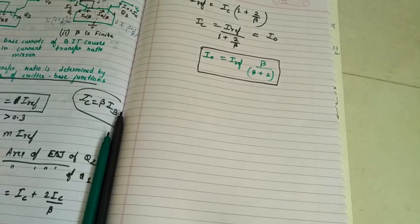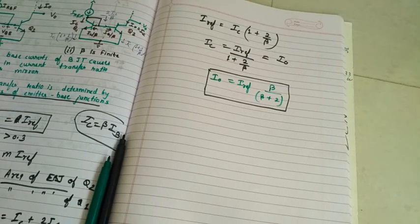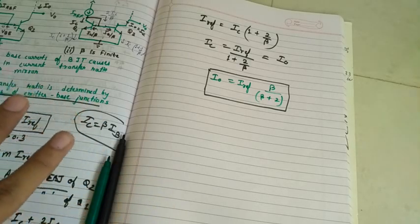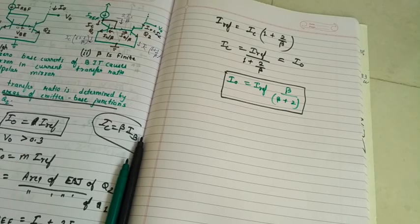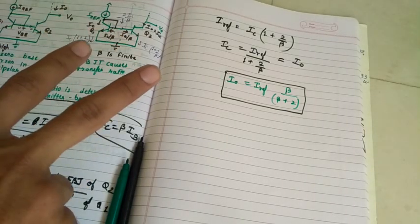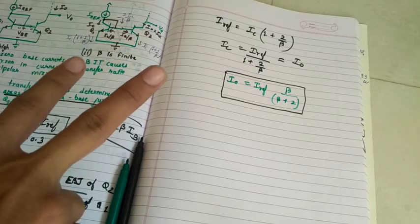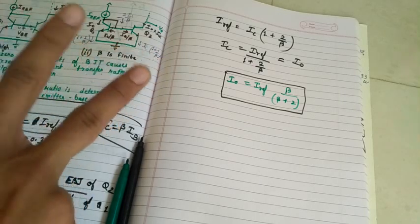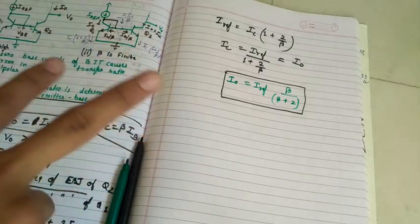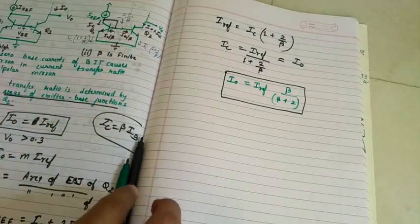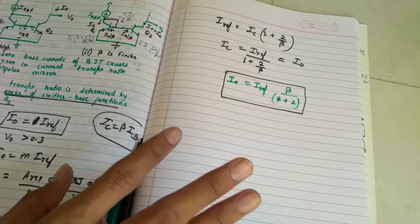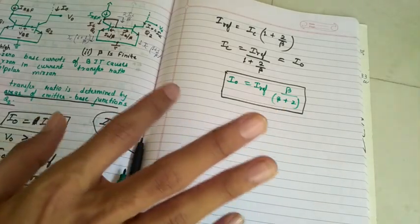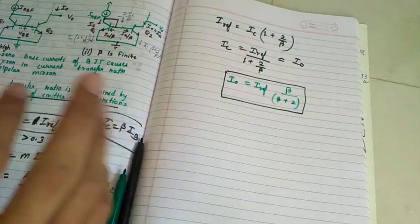Note that when beta approaches infinity in this equation, we get I0 equals I-reference, which is case number 1. So this equation is valid. The key point to be considered in case number 2 is that we assume that these two transistors are matched, that is the area of emitter-base junction of Q1 and Q2 are same. Just applying KCL we get this. This is the equation which is very much important. That's all for this. Thank you.